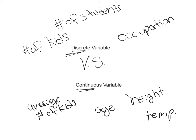Think of continuous variables as time, height, weight, temperature, and averages. For discrete variables, think whole numbers or whole concepts like occupations or the number of students in a class at a certain time. You can't have 22.5 students in a class. On average across all combined classes you might get 22.5, but in one particular class you can't have half a student.